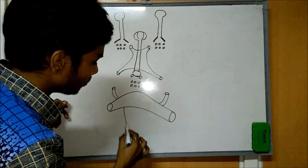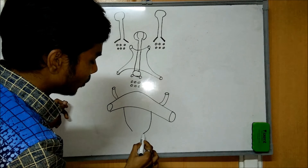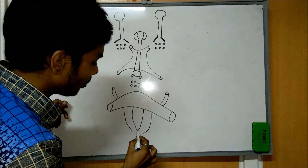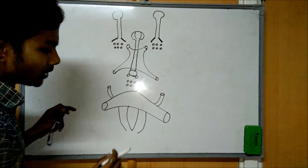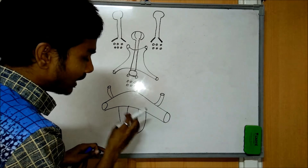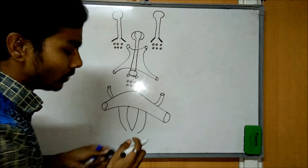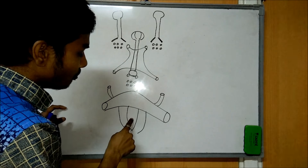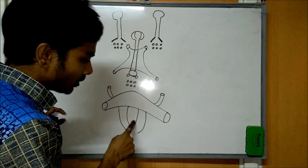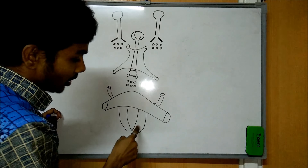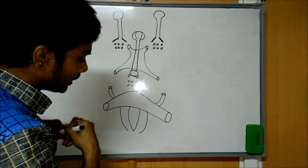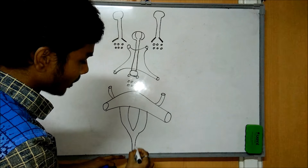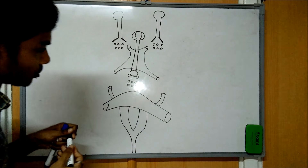After that, it moves on to the medulla oblongata. In the medulla oblongata, we have pyramid-like structures and olive-like structures. Then the medulla oblongata with its olives moves on to the spinal cord.